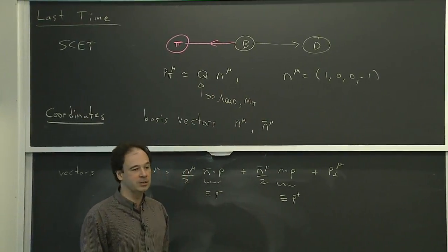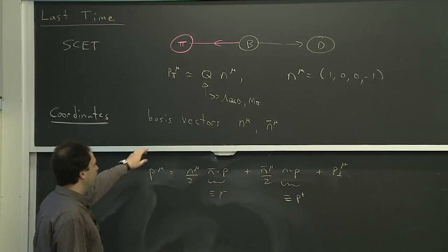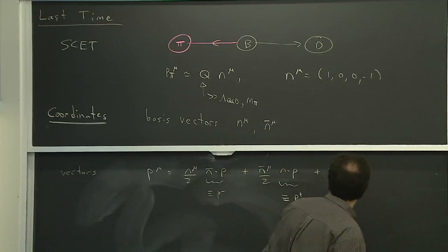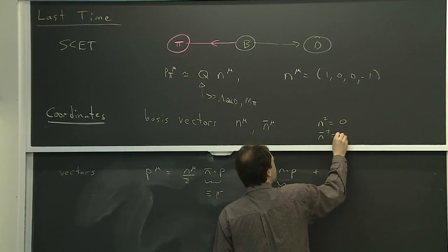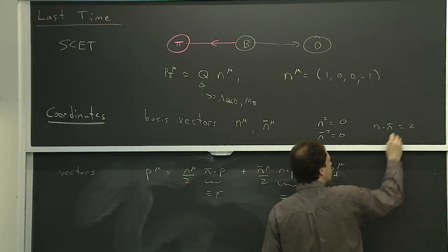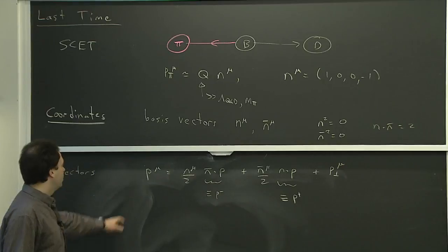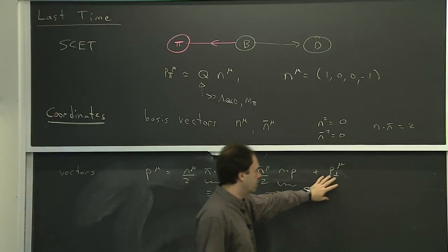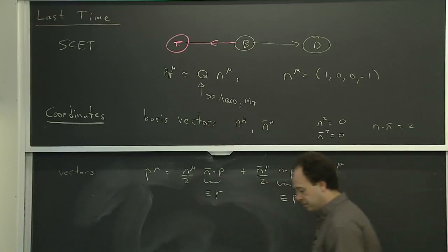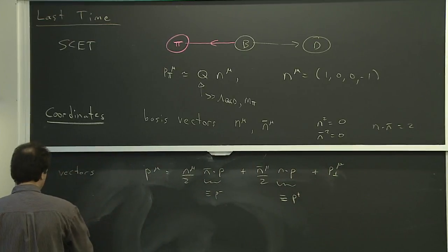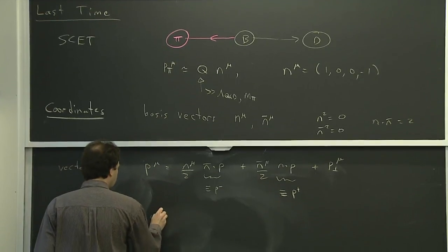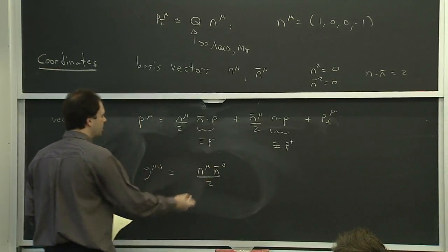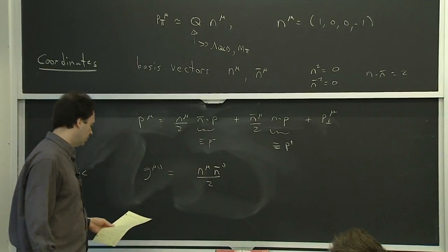It's much bigger than lambda QCD, much bigger than m_pi, and it moves basically along a light cone direction. So that was a motivation for us to use light cone coordinates. We introduced an n and an n-bar, which satisfy n² = 0, n-bar² = 0, and n·n-bar = 2 as a normalization convention. We can decompose any momentum p_mu in terms of components along n, components along n-bar, and the remaining two perpendicular components.